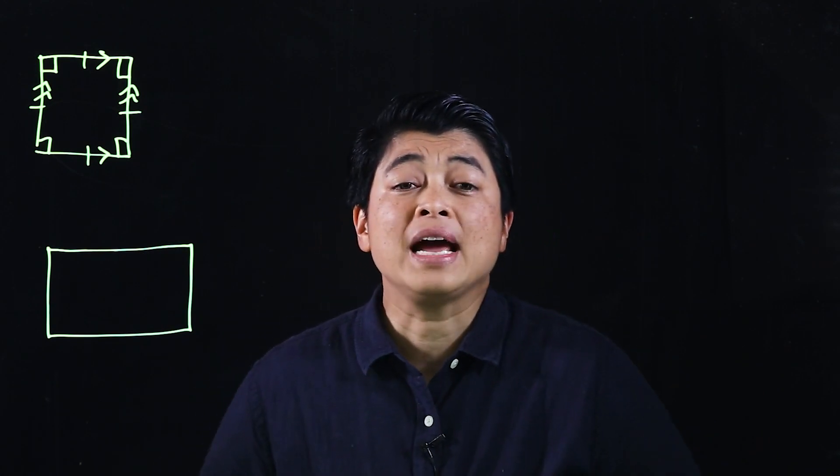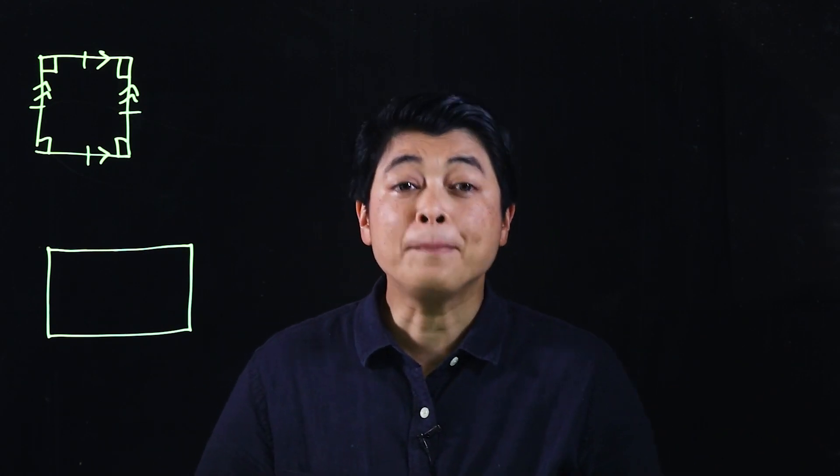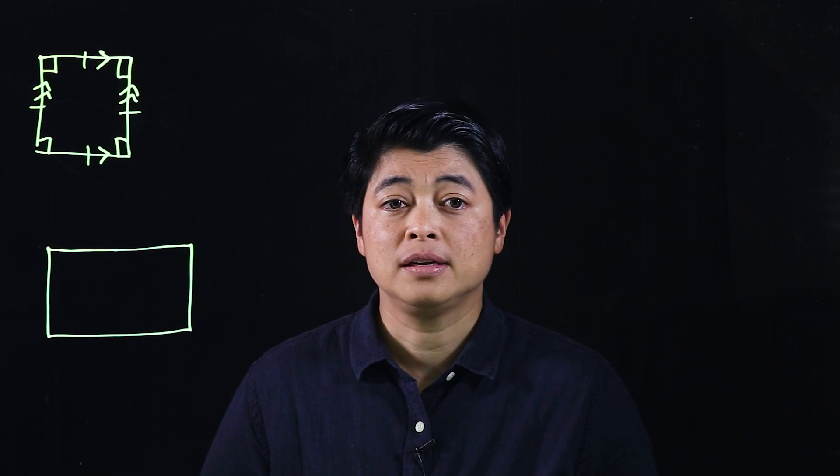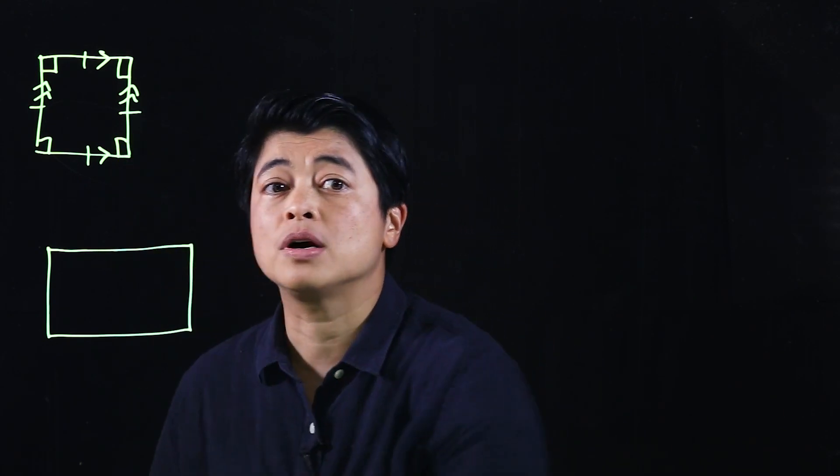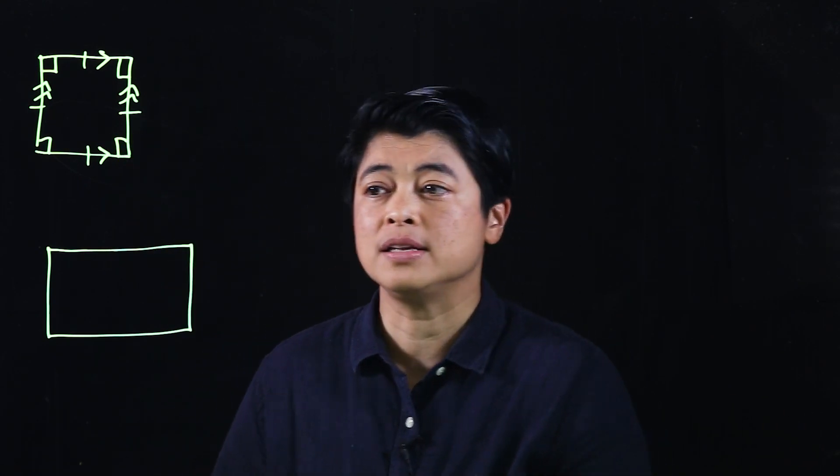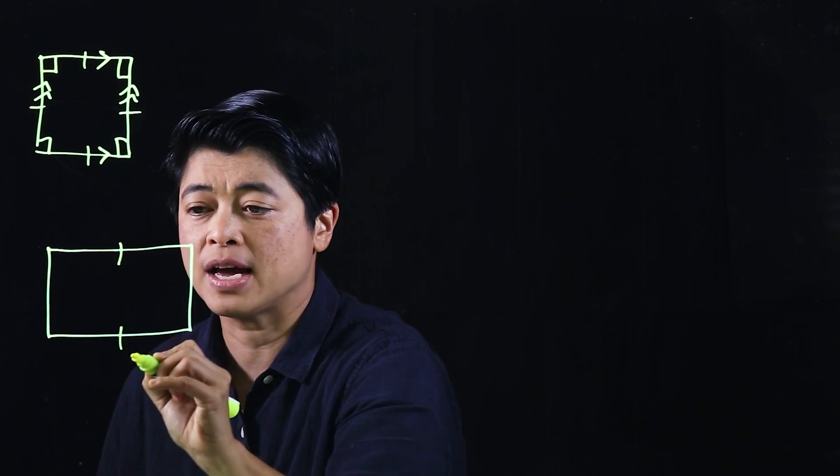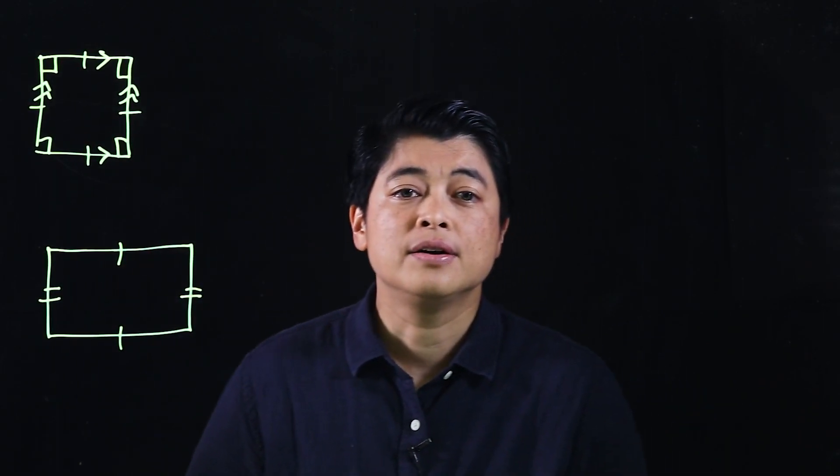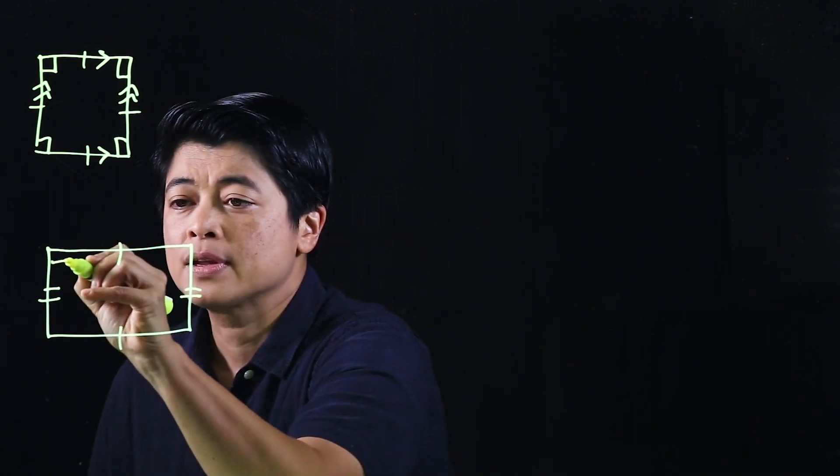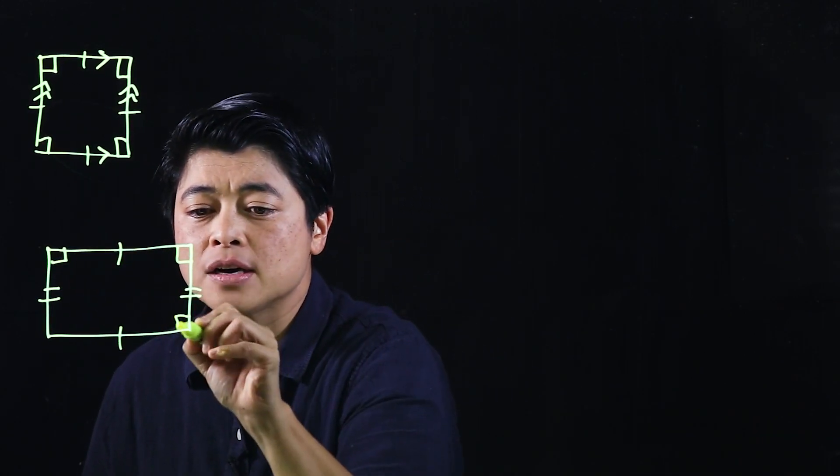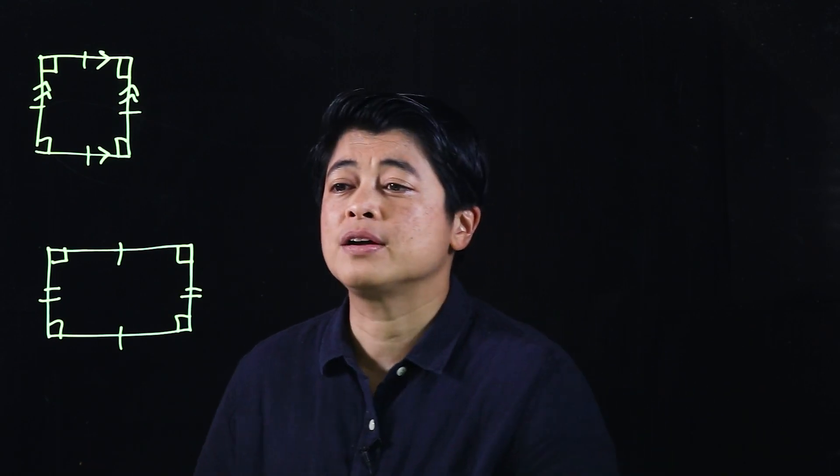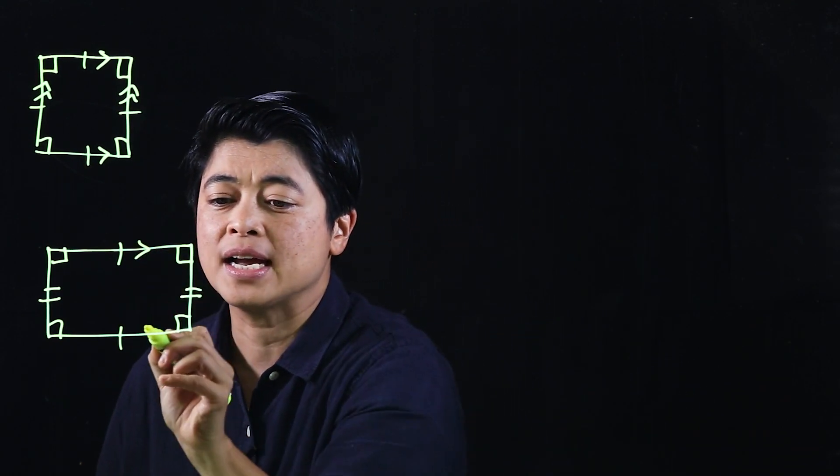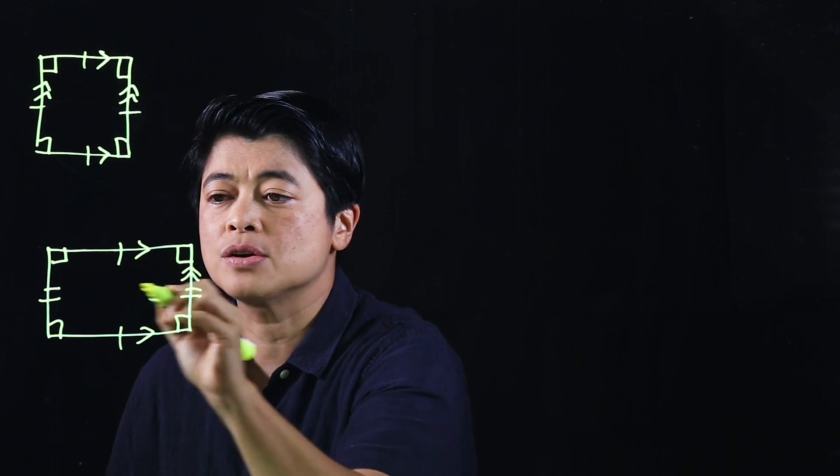With a rectangle, the opposite sides are equal, unlike the square where all four sides are equal. So that means this is equal to that and that side is equal to that. With a rectangle, all four angles are also right angles, and opposite sides are also parallel.